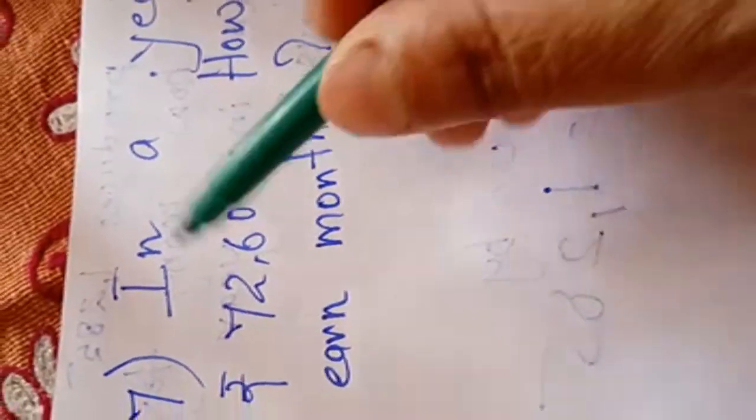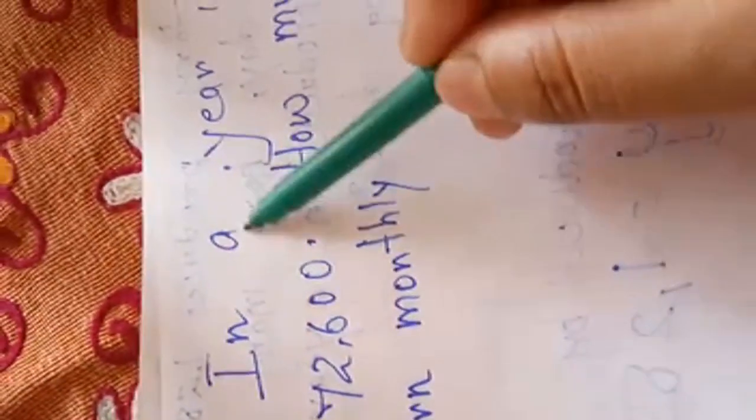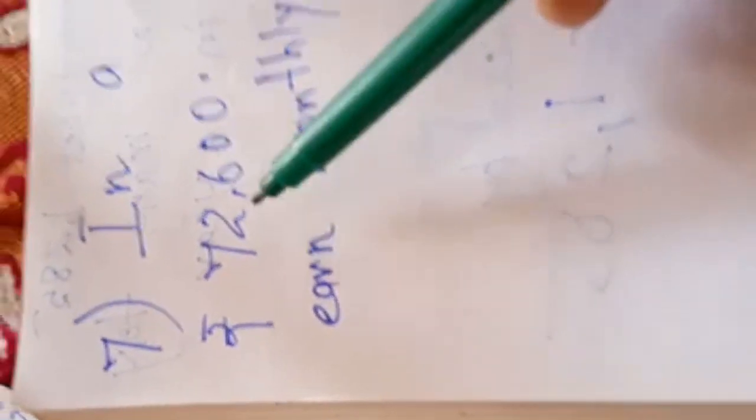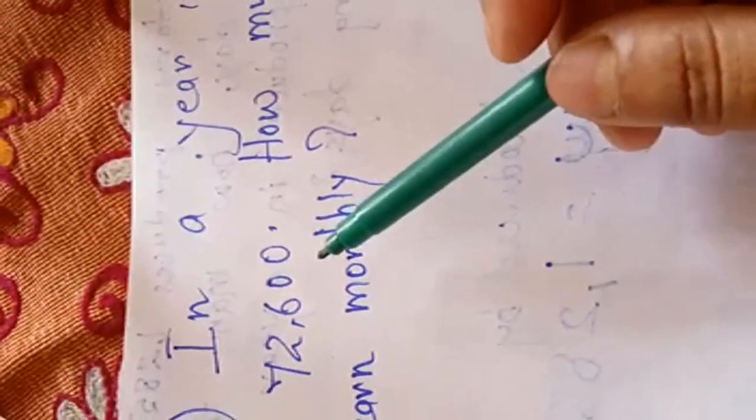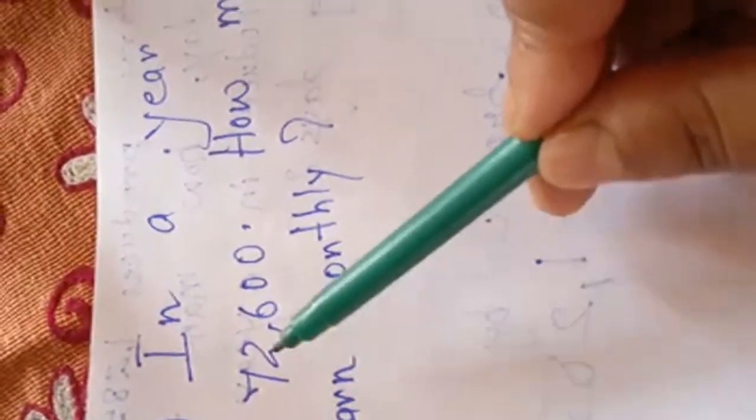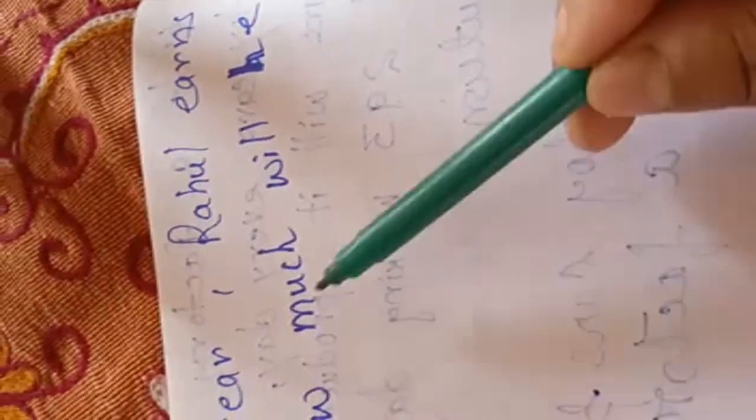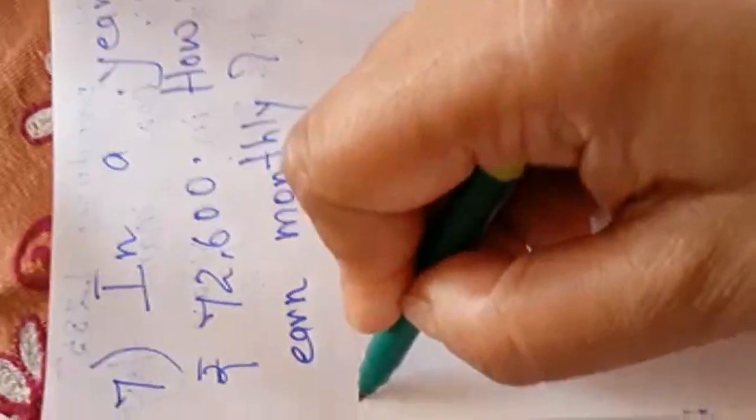Now, children, in question number 7. In a year, Rahul earns Rs. 72,600. In a year, a year has 12 months. So, in 12 months, Rahul earns 72,600. Question is, how much will he earn monthly? In one month, he will earn how much?